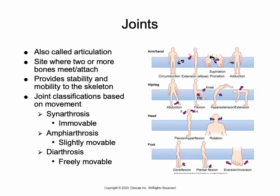Now we move our discussion to joints. A joint by definition is any site where two or more bones are attached — sometimes referred to as an articulation. The primary function of our joints is to provide stability and mobility. Generally, joints that stabilize the skeleton have a very simple structure, as opposed to joints that provide mobility, which have a more complex structure.